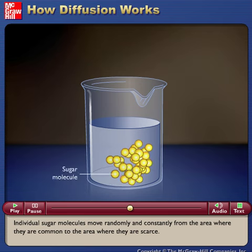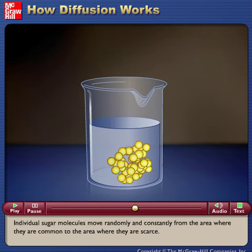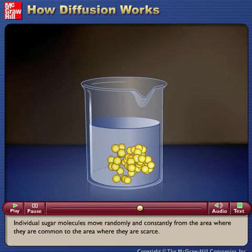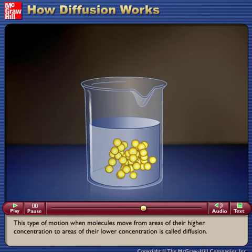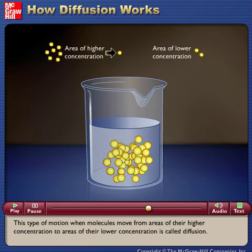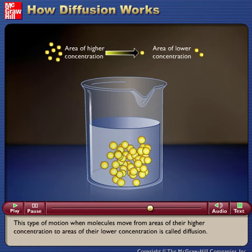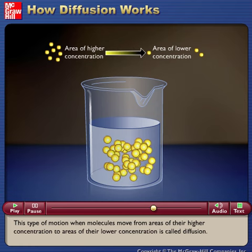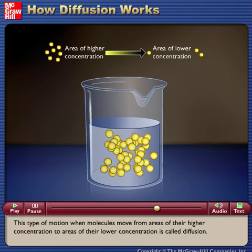Individual sugar molecules move randomly and constantly from the area where they are common to the area where they are scarce. This type of motion, when molecules move from areas of their higher concentration to areas of their lower concentration, is called diffusion.